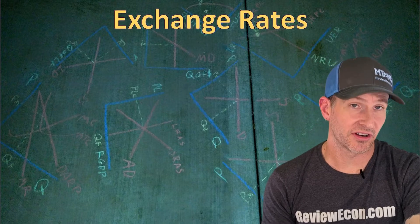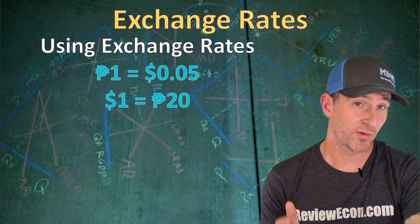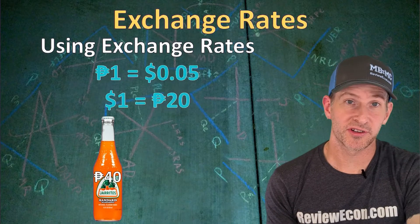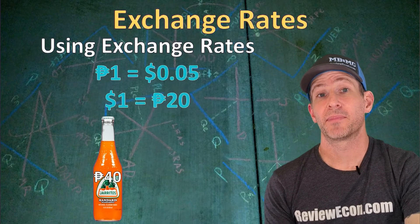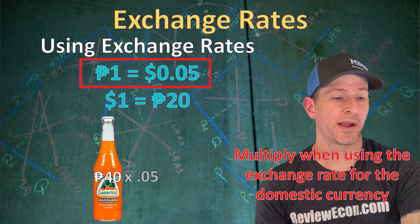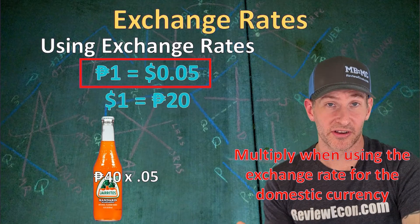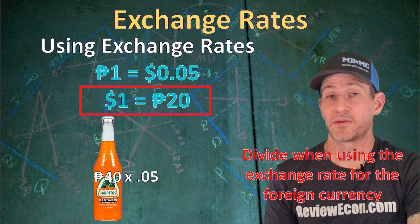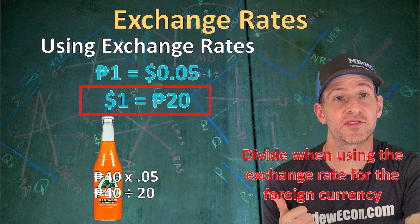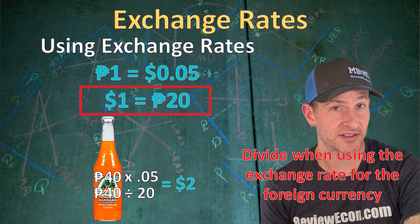We can use exchange rates to determine the price of something in different currencies. If one peso is worth 5 cents — the same as a dollar being worth 20 pesos — and a soda made in Mexico costs 40 pesos, we can convert that to dollars. Using the peso exchange rate, we multiply: 40 pesos times 5 cents. Or we divide 40 pesos by 20 (the dollar's value in pesos). Either way, we get a $2 price for that 40-peso soda.